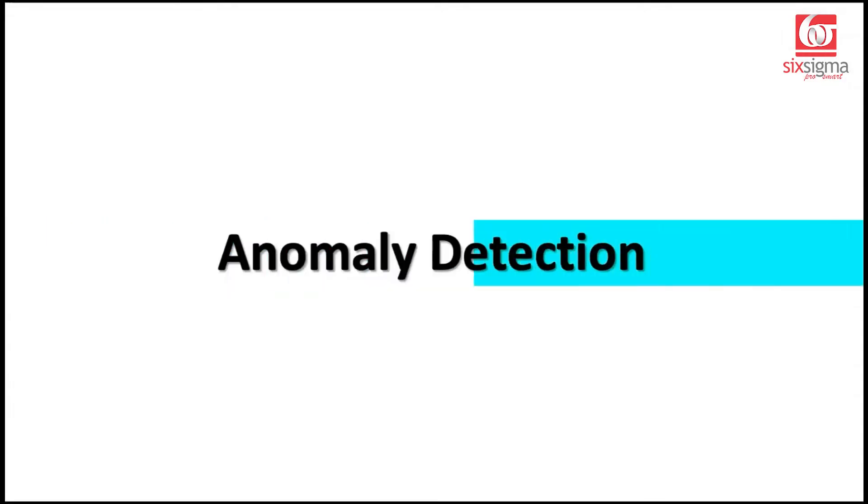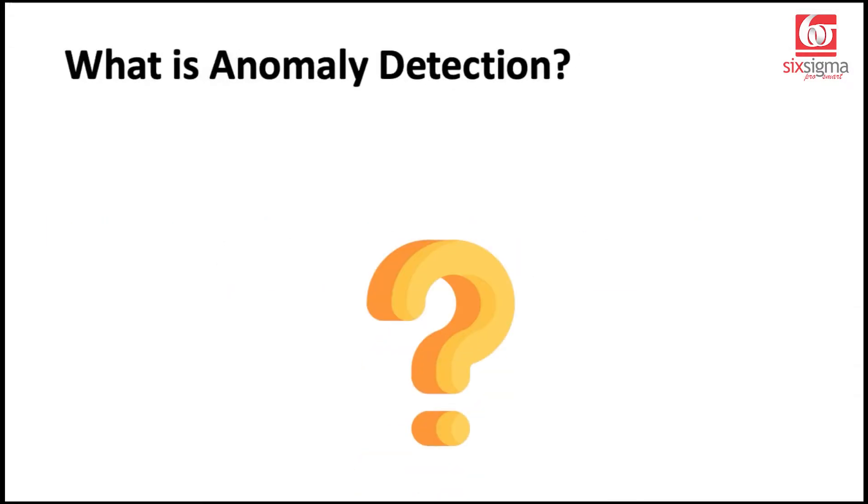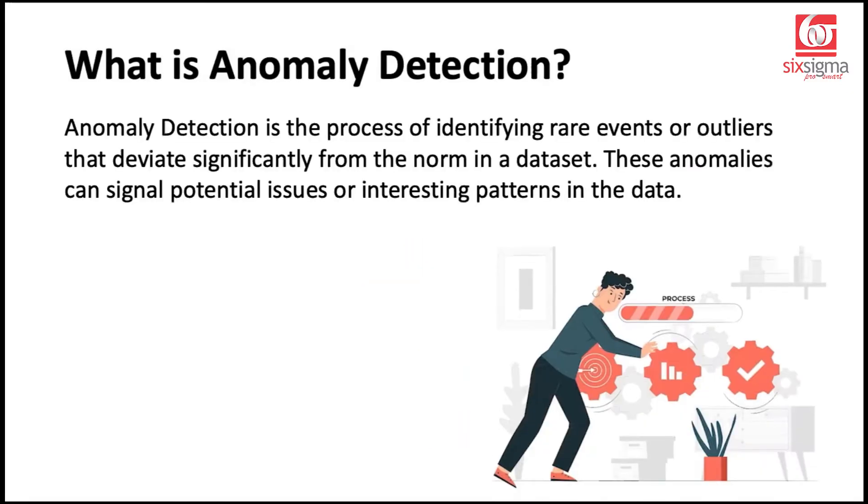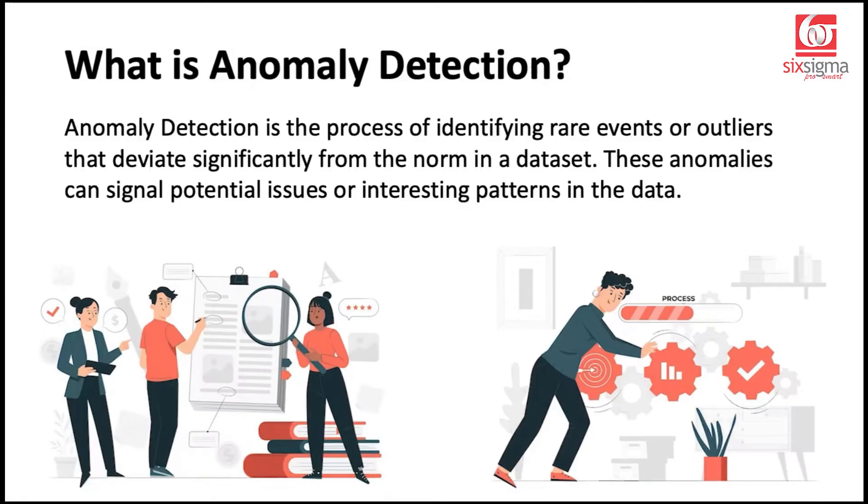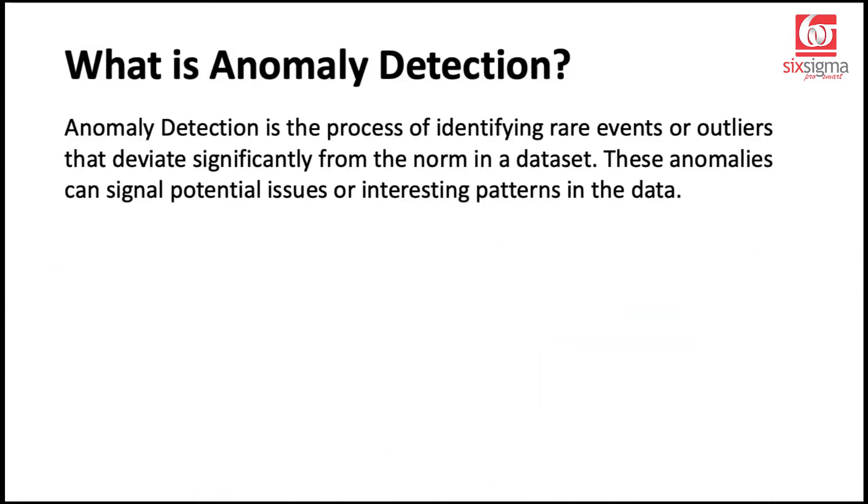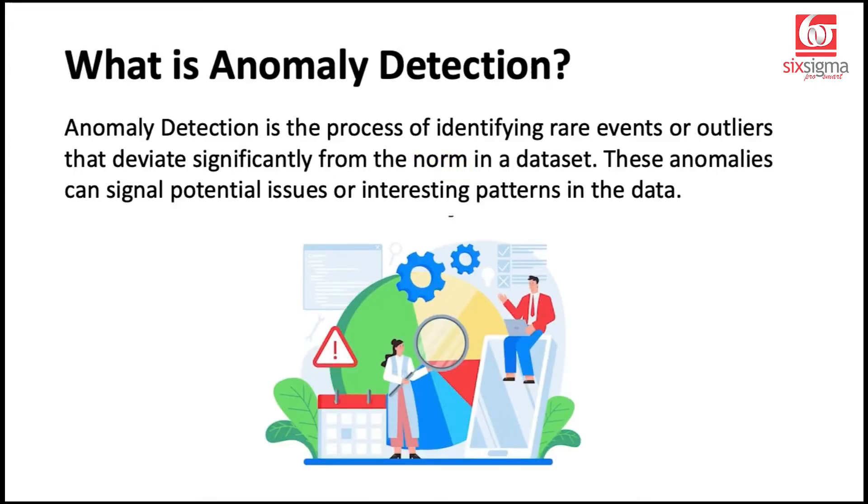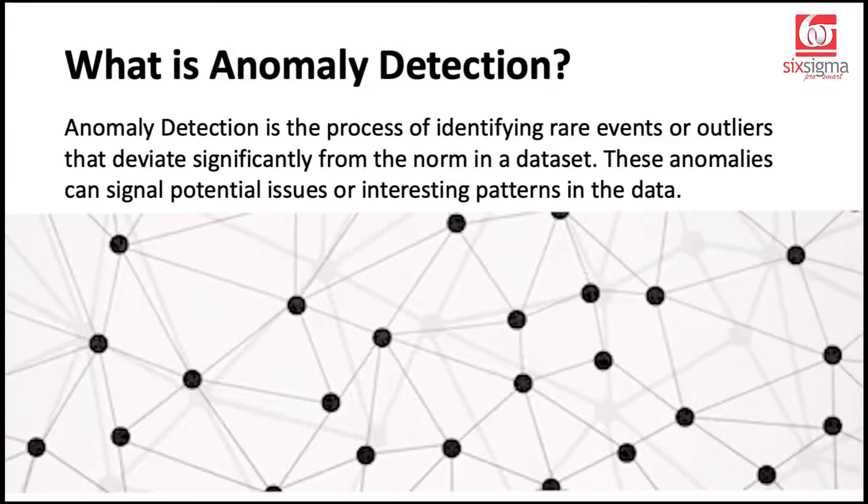In this video, we're going to talk about anomaly detection. So let's start with what are anomalies and why do we need to do anomaly detection. Anomaly detection is the process of identifying rare events or outliers that deviate significantly from the norm in a dataset. These anomalies can signal potential issues or interesting patterns in the data.